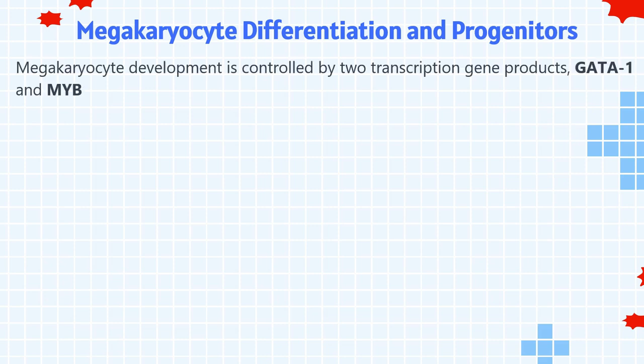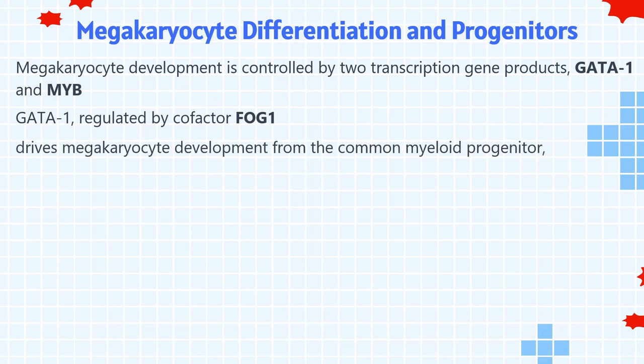Megakaryocyte development is controlled by two transcription gene products, GATA1 and MYB. GATA1, regulated by cofactor FOG1, drives megakaryocyte development from the common myeloid progenitor, while MYB suppresses it. The result is a balance between megakaryocytopoiesis and erythropoiesis.